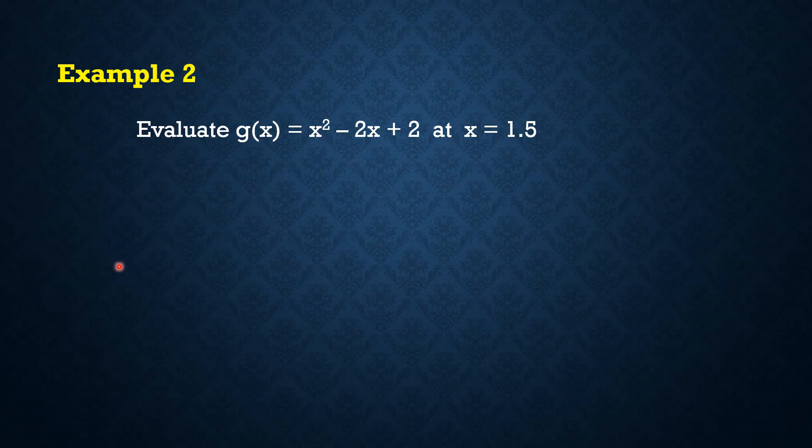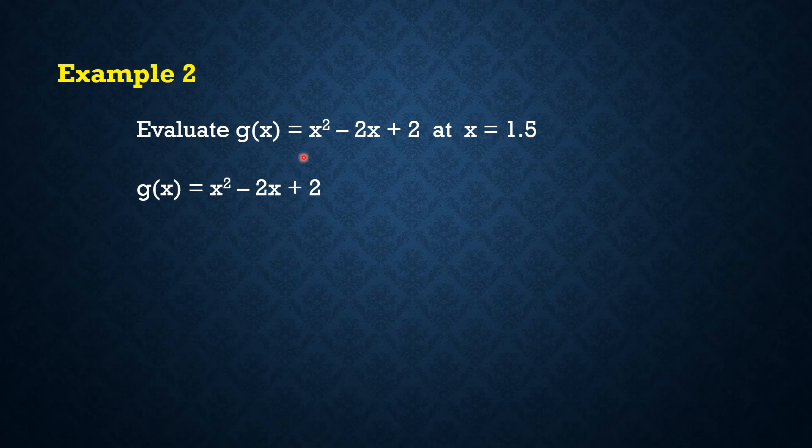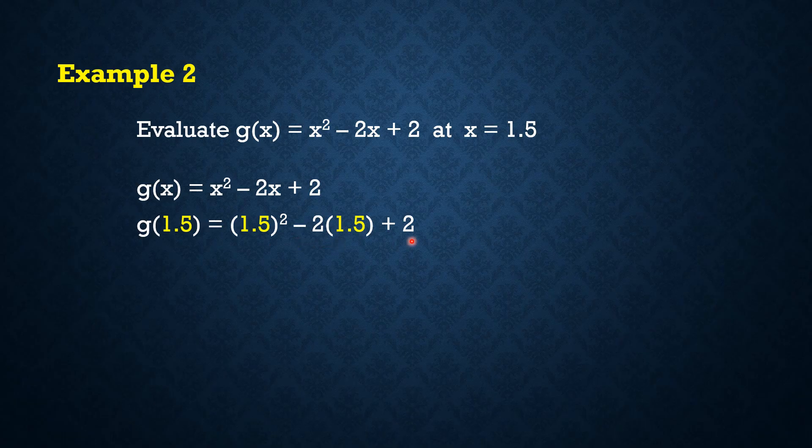Take a look at the next example. Let's evaluate g(x) = x² - 2x + 2 at x = 1.5. So technically, in order to find the value of the function g(x) when x = 1.5, isasubstitute lang natin yung 1.5 sa lahat ng x na meron tayo sa function. Now, it is important that you know how to perform these operations. Dapat familiar ka sa order of operation.